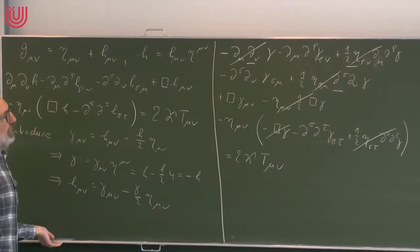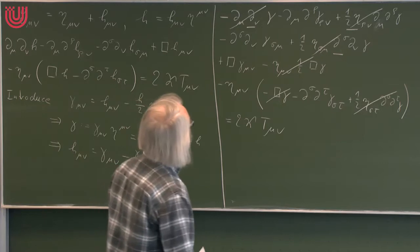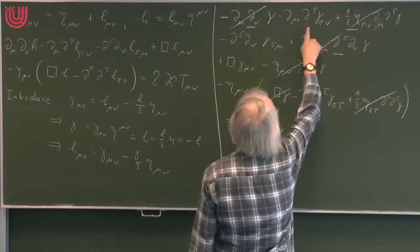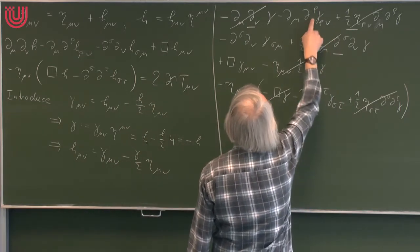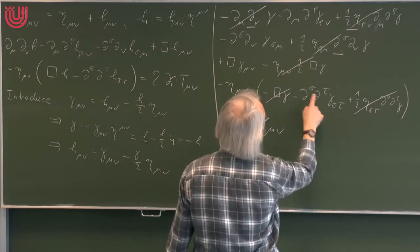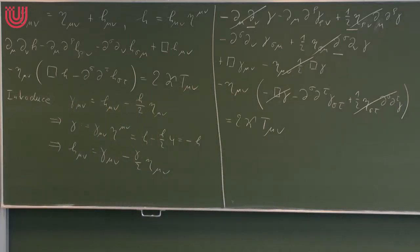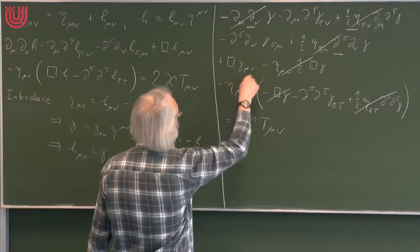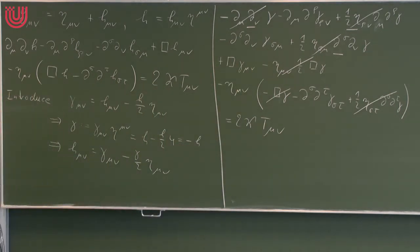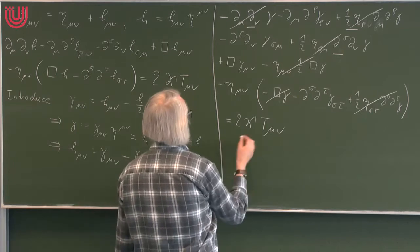All the remaining terms involve a divergence of γ — here is summation over ρ (a divergence), here summation over σ (again a divergence). If we were able to kill all these divergence terms, then only the box term would survive and we would get a very nice wave equation. That's actually possible if we make a coordinate transformation.